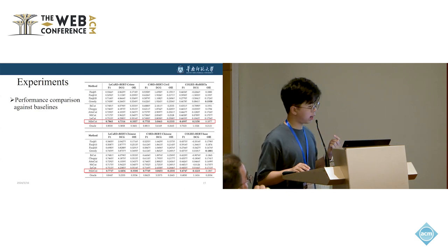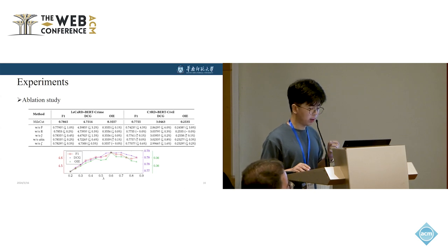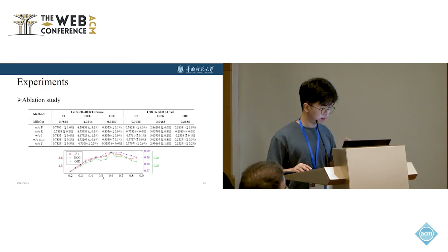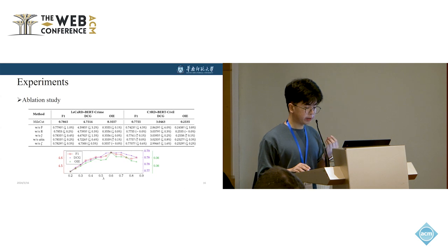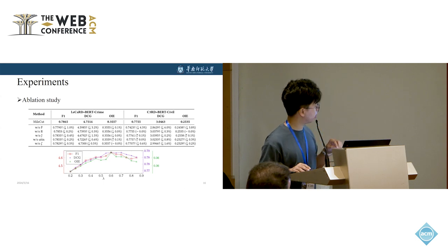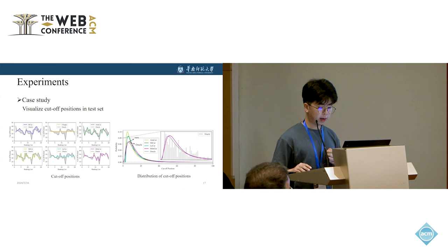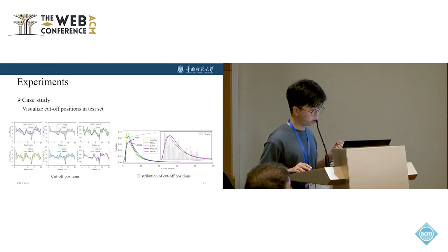Here is the main result. We can find that MileCut surpasses other baselines in most results. Our ablation study showed that removing any components in MileCut will decrease the performance. The coefficient between 0.6 and 0.7 generally achieves overall better performance.